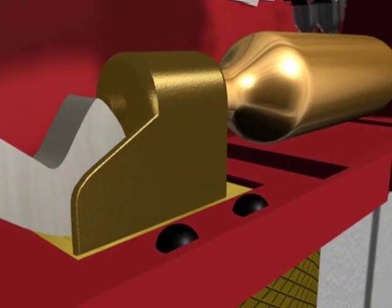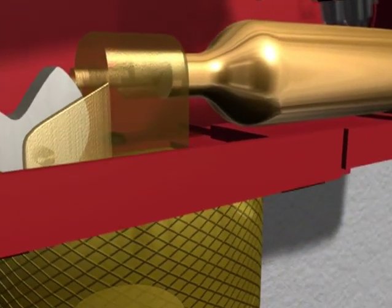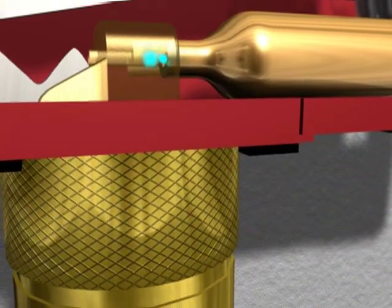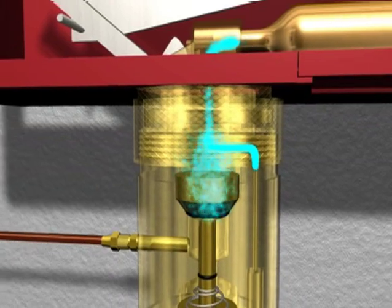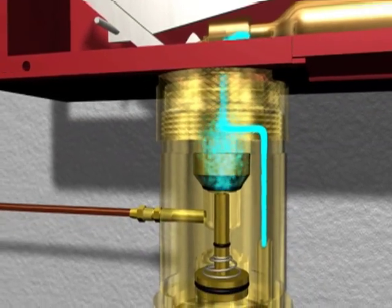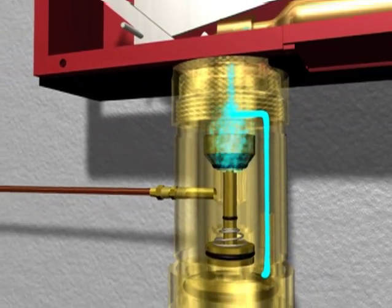During the system release, a lever within the control head forces a pin to puncture the small CO2 cartridge, sending carbon dioxide to the time delay. The time delay retards the system discharge by 10 to 20 seconds.